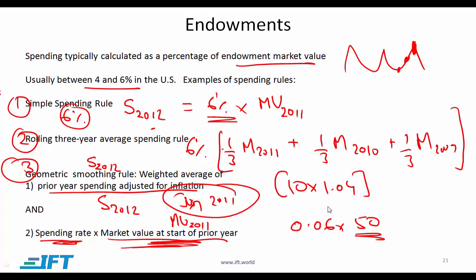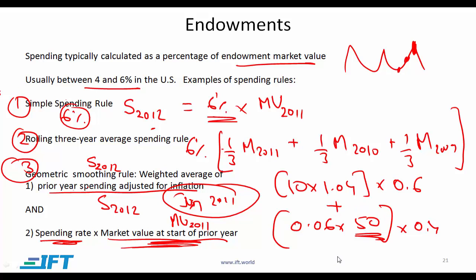These are the two numbers and then you take a weighted average. The question will tell you what weights to use. For example, if the weight for the first component is 60% and the second is 40%, you multiply accordingly and add the two results. That gives you the weighted average, which is your planned spending for 2012.